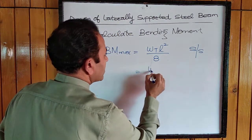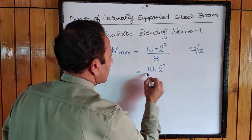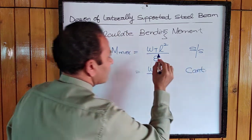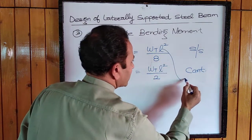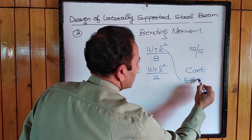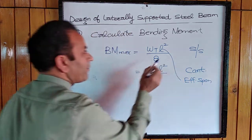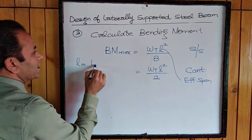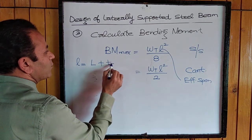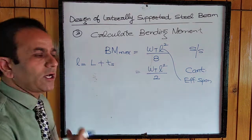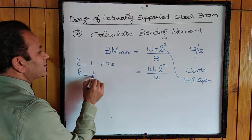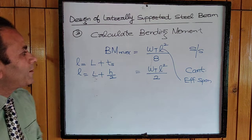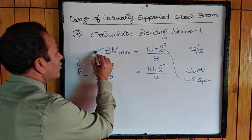For a cantilever beam, the bending moment is equal to the total load times l squared divided by 2, where l is the effective span. For a simply supported beam, effective span is the clear span plus one support thickness (half on each end). For a cantilever, it is l plus half the depth of the beam.